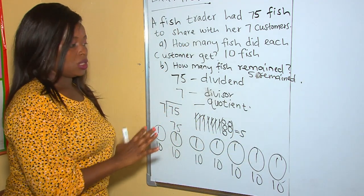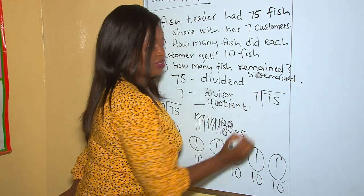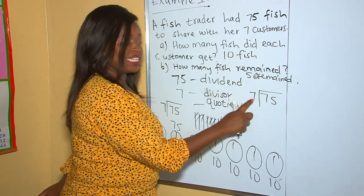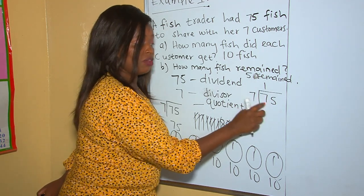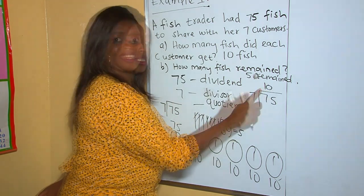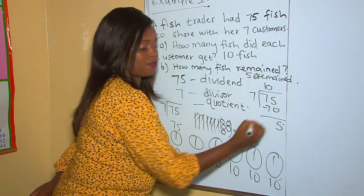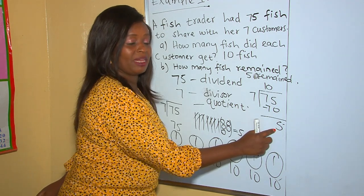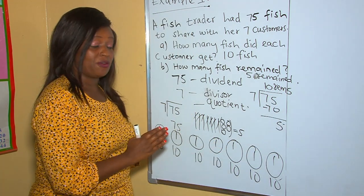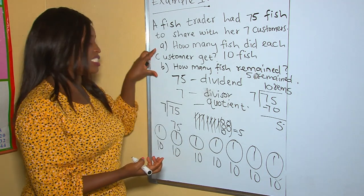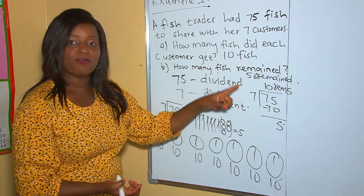Using long division: 75 divided by seven. Seven tens divided by seven is one. Seven tens is seventy; seventy divided by seven is ten. Ten times seven is seventy. When you take away, you get five. This five is our remainder. Each customer got ten fish and five fish remained — answering both questions: how many fish did each customer get? Ten fish. How many fish remained? Five remained.